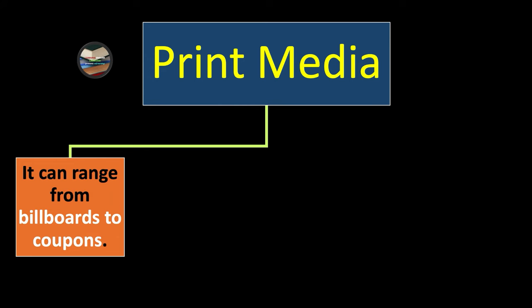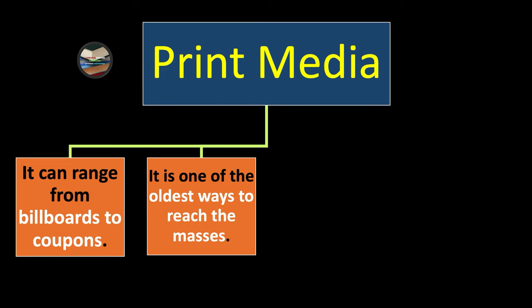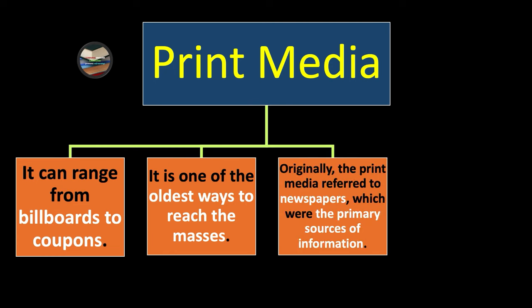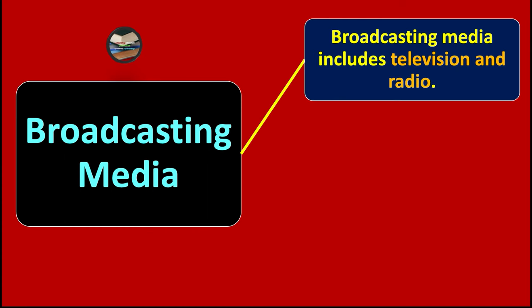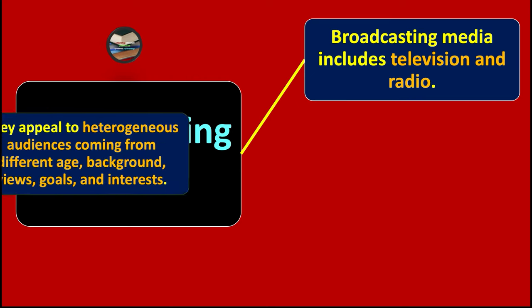Print media is one of the oldest ways to reach the masses. Originally, print media referred to newspapers, which were the primary sources of information. Further, this type of media includes journals, books, and magazines.